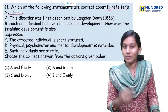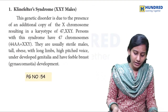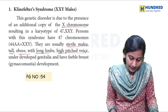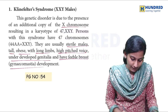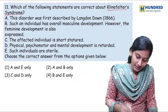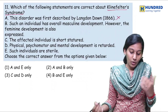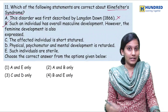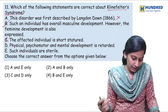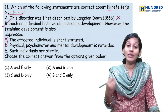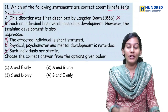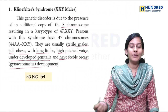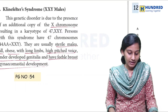Next: which of the following statements are correct about Klinefelter syndrome? So Klinefelter syndrome — genetic disorder, presence of an additional copy. The symptoms include sterile males, tall, obese, long limbs, high-pitched voice, underdeveloped genitalia, and feeble breast development. Such individuals have overall masculine development, however feminine development is also expressed. Affected individuals are not of short stature — they are tall. Physical, psychomotor, and mental development are retarded. Such individuals are sterile. The right answer here is options B and D.